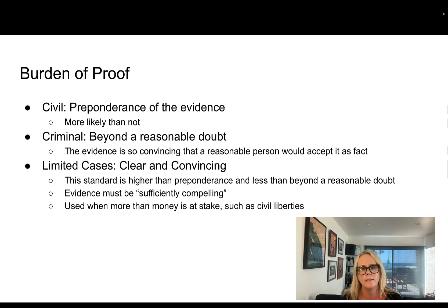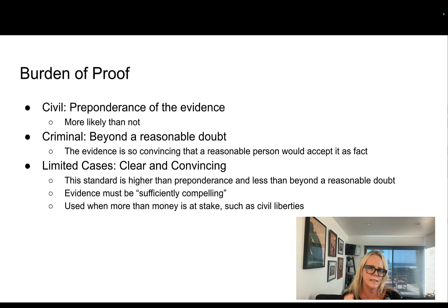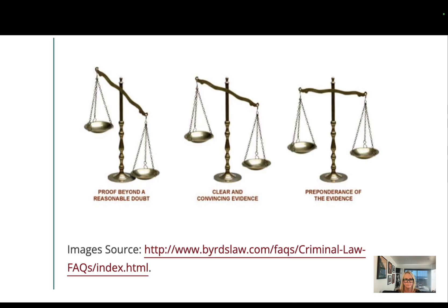Sometimes there are limited cases that require clear and convincing evidence. Clear and convincing is a higher standard than preponderance but less than beyond a reasonable doubt — the evidence has to be sufficiently compelling. This is generally used when there's more than money at stake, such as someone's civil liberty. Beyond a reasonable doubt requires 99.999% certainty; clear and convincing is more like 60-40; and preponderance is more like 51%.